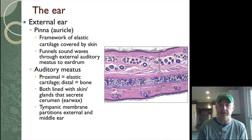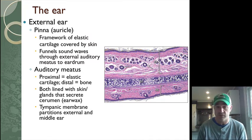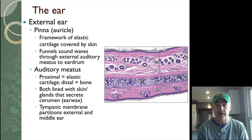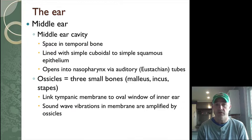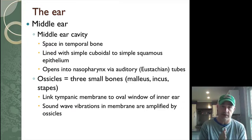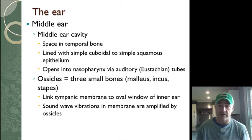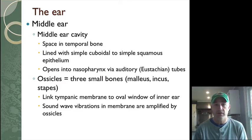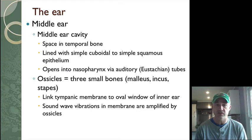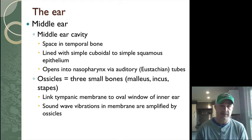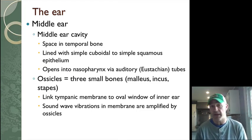The ear canal ends in what is called the eardrum or tympanic membrane, which separates the external ear from the middle ear. The middle ear is an air-filled cavity behind the tympanic membrane, lined with simple cuboidal and squamous epithelium. There is an opening to the throat region through what's called the Eustachian tubes, which helps equalize pressure on both sides of the tympanic membrane.